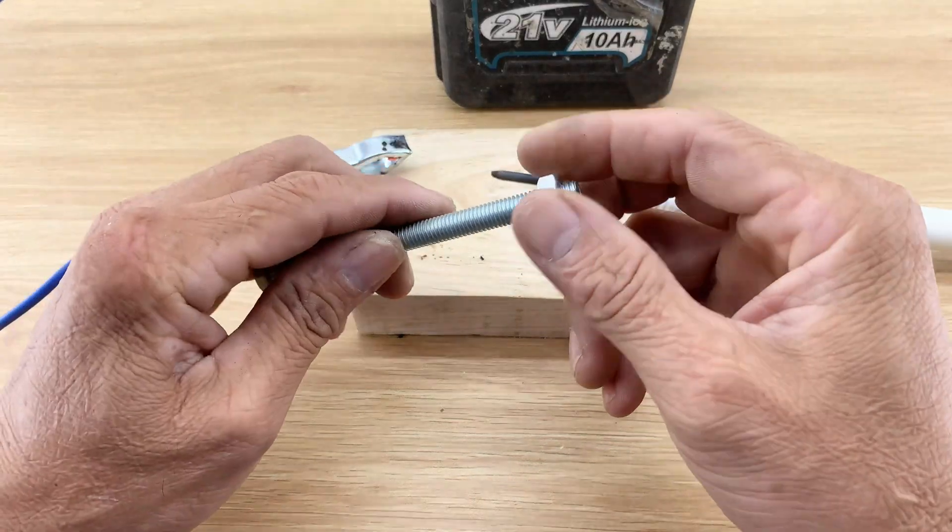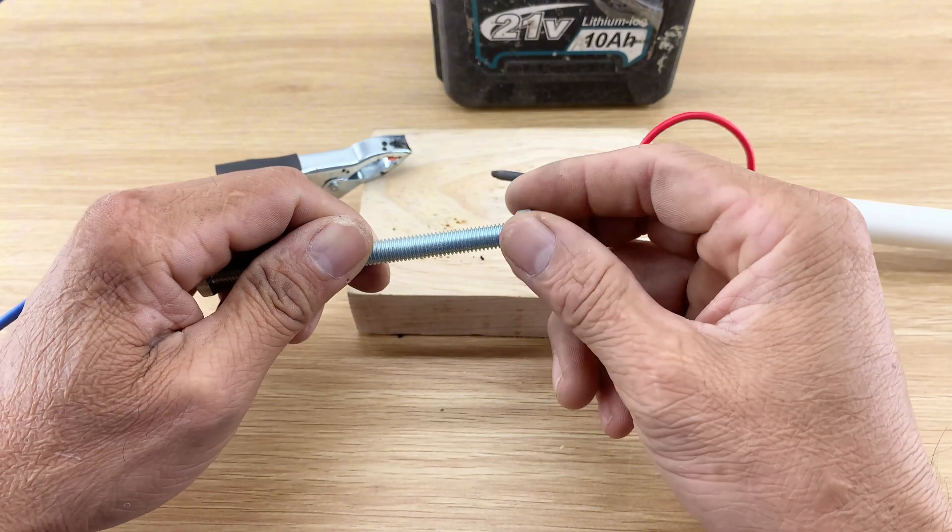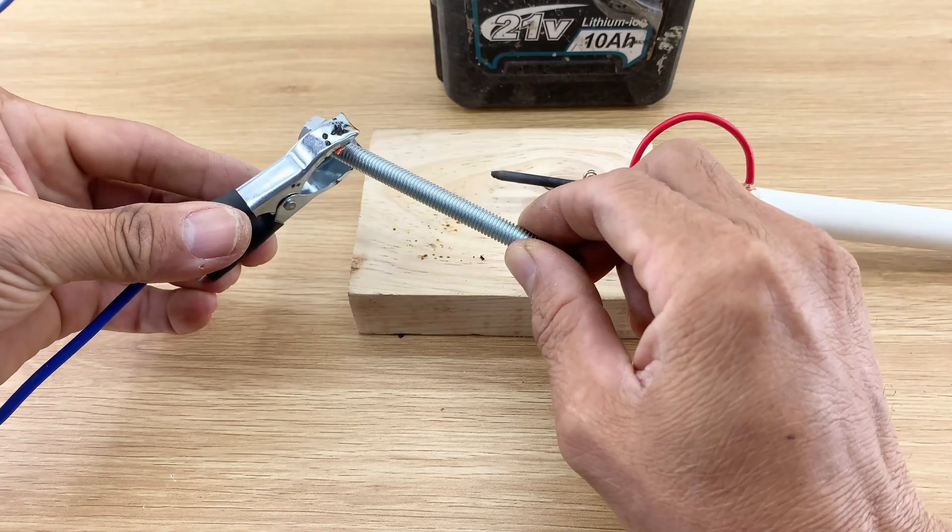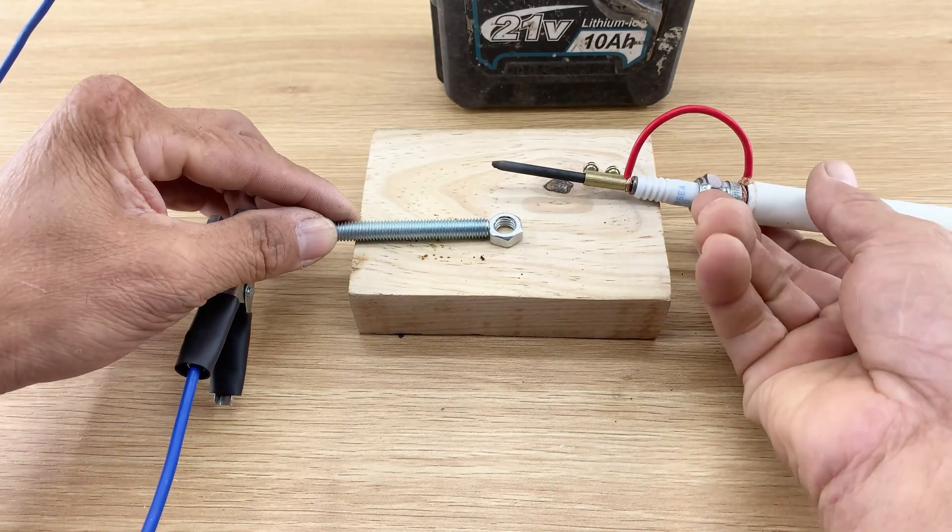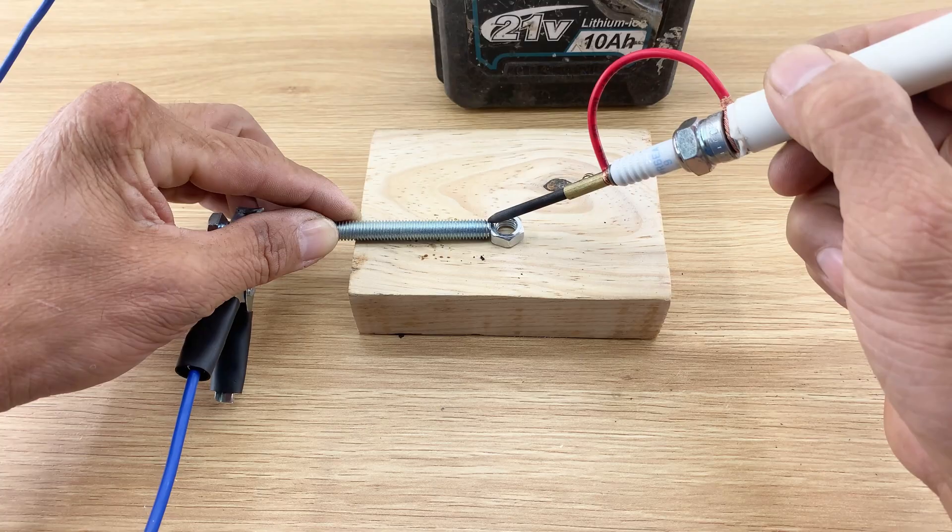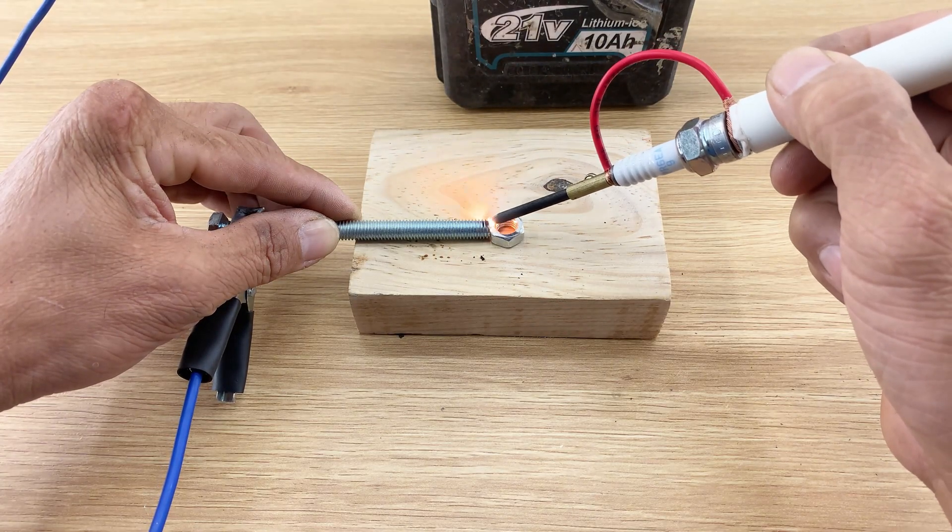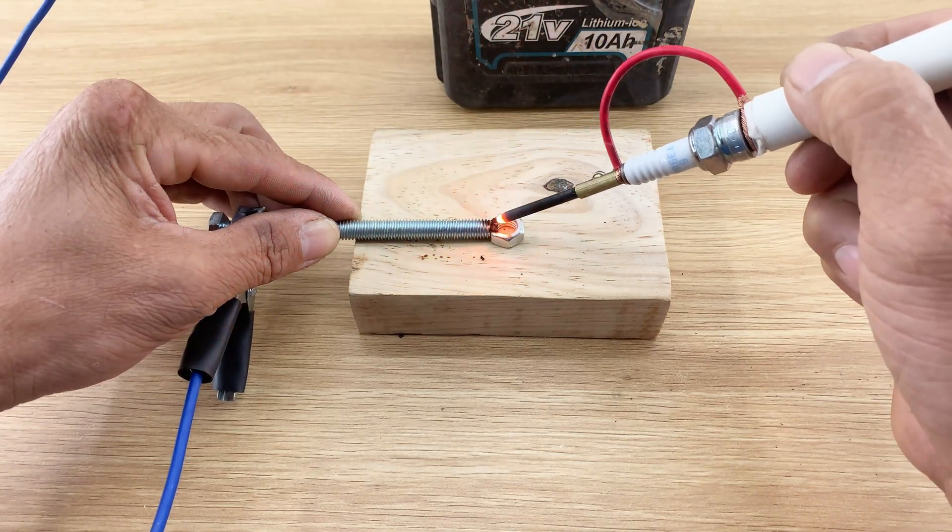For the ultimate test, I'm using a metal bolt. I'll even try welding a nut onto a metal bolt. The intense, localized heat from the carbon rod quickly fuses the metal surfaces, creating a secure bond. This DIY device proves that with a little creativity and some basic components, you can achieve amazing things.